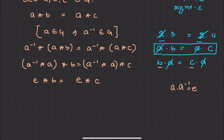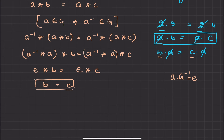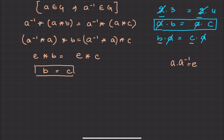When we operate with identity, we get the same thing — identity doesn't change the value. So b is equal to c, we have proved. Therefore, we can say that left cancellation is holding. When the left element is equal, we just get b is equal to c. A gets cancelled out because it was the same on both sides. Therefore, left cancellation holds in G.